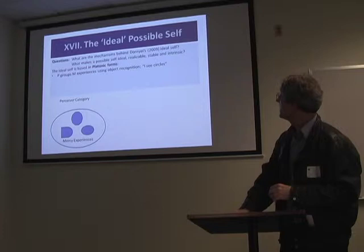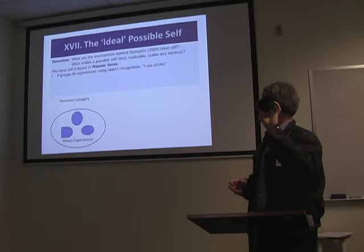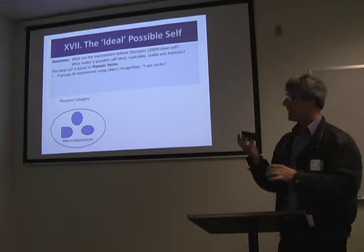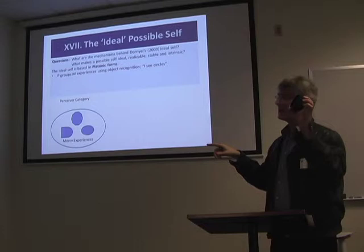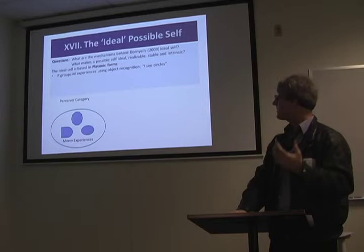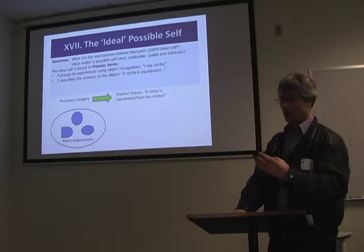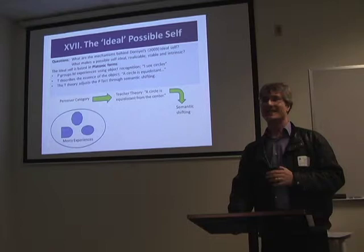The ideal self, I suggest, is based in Platonic forms. Now I want to look at the mental mechanism behind Platonic forms. For example, a bunch of brown things, circular things — none of them are perfect, but there are many circular things. Mercy experiences provide these. Perceiver says, aha, there's a category called circles — there's similarity, because that's what perceiver thought looks for. Teacher thought then makes a theory out of it: what is a circle? It's a round thing — more technically, all the points that are equidistant from the center.